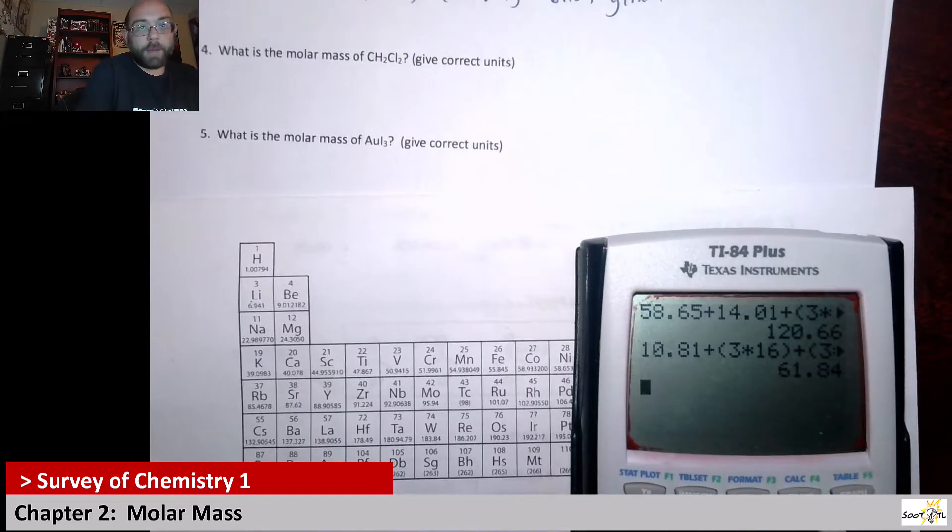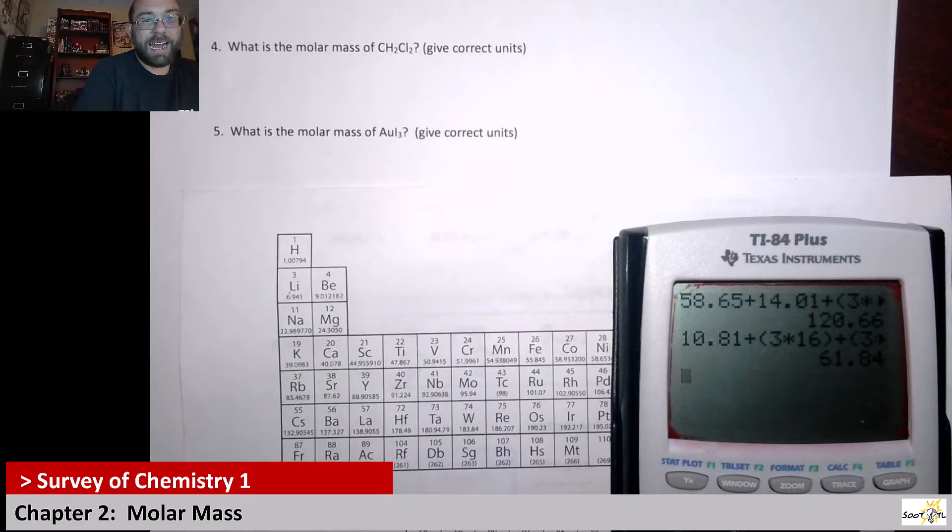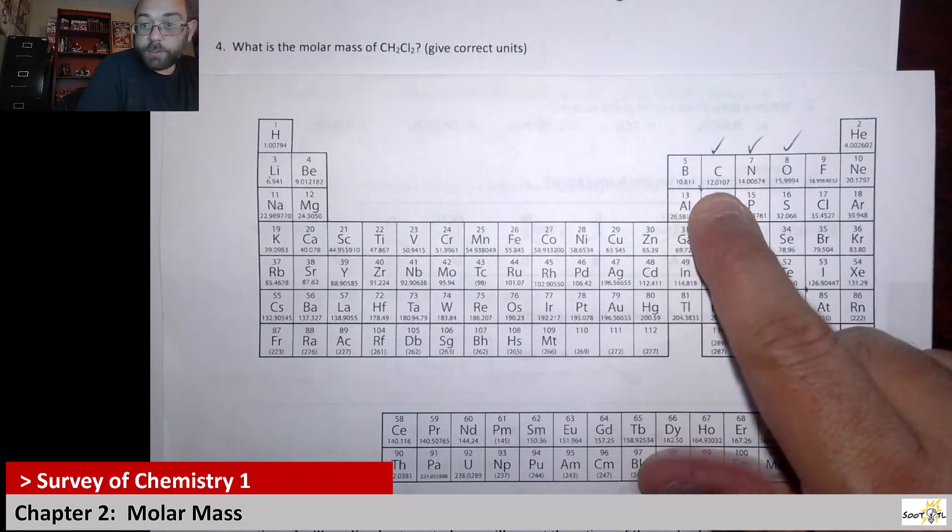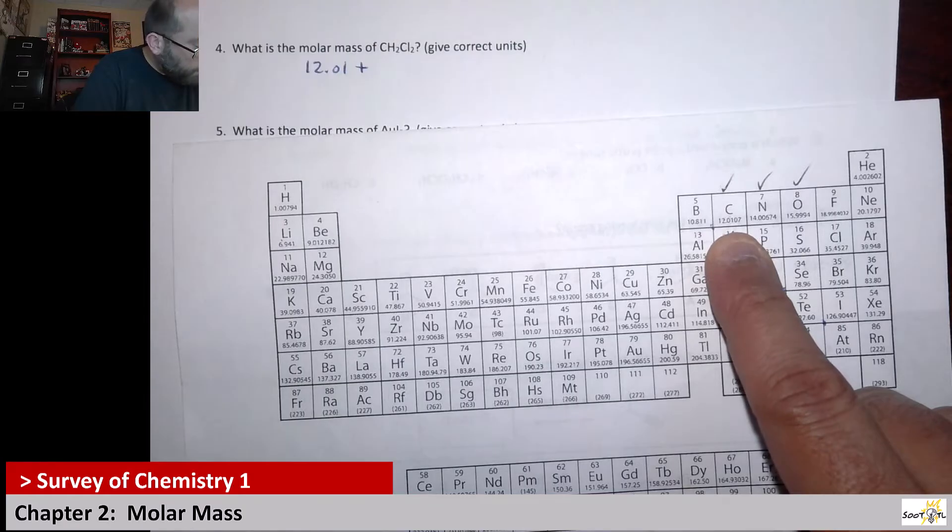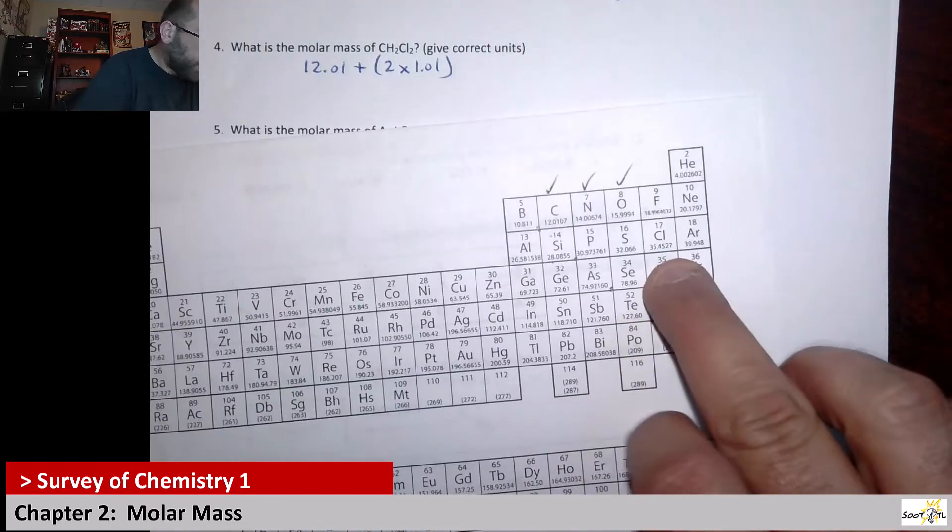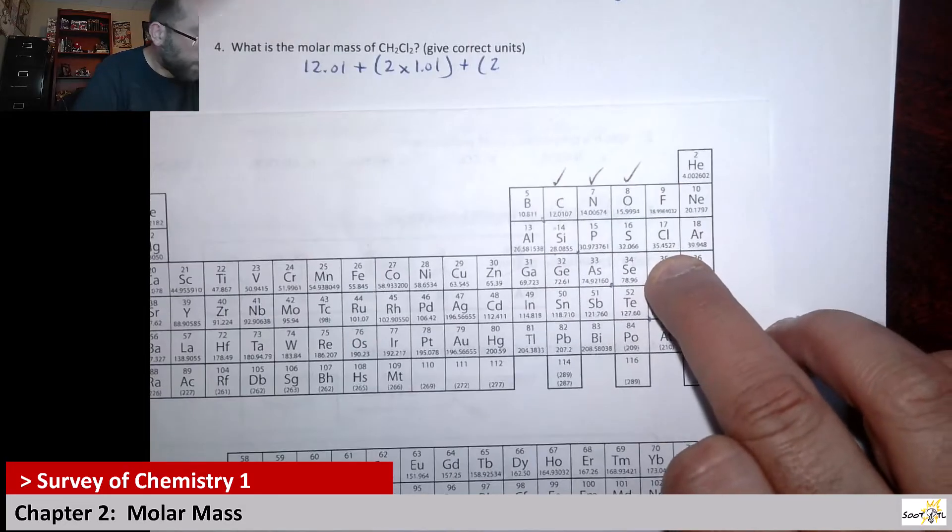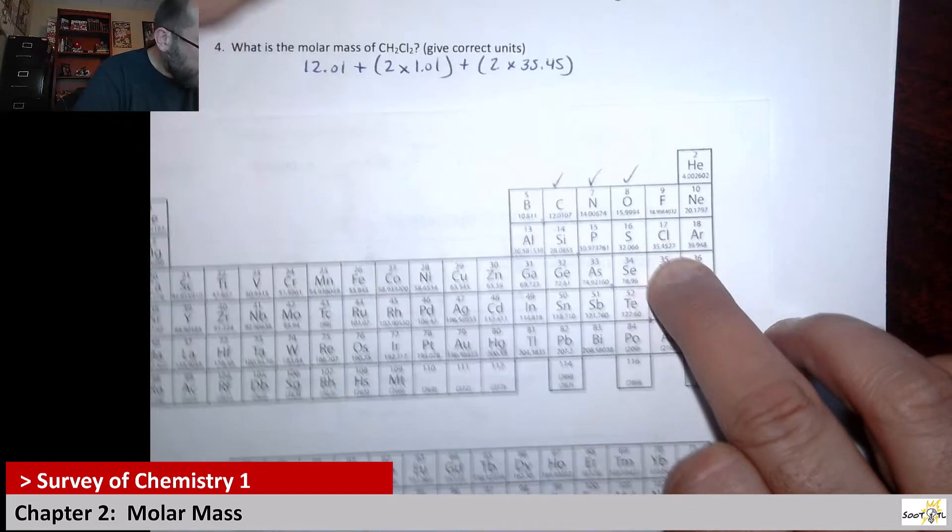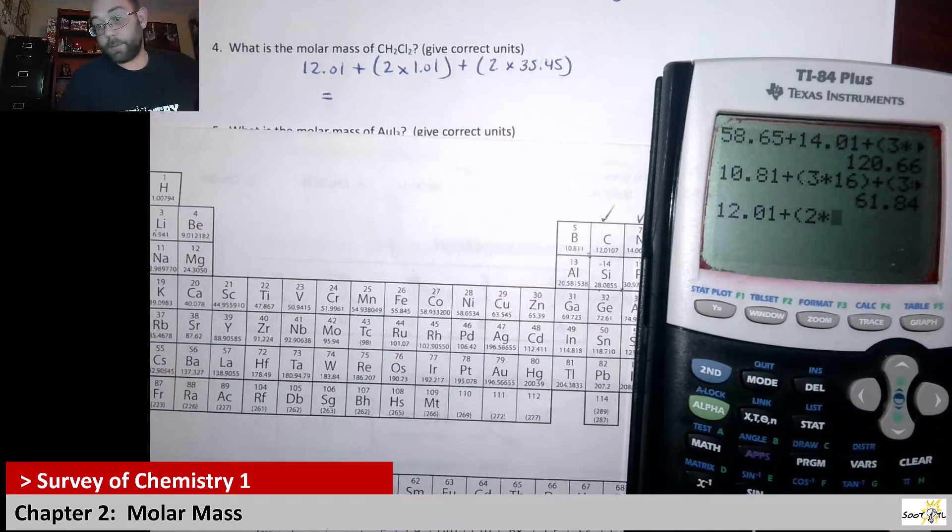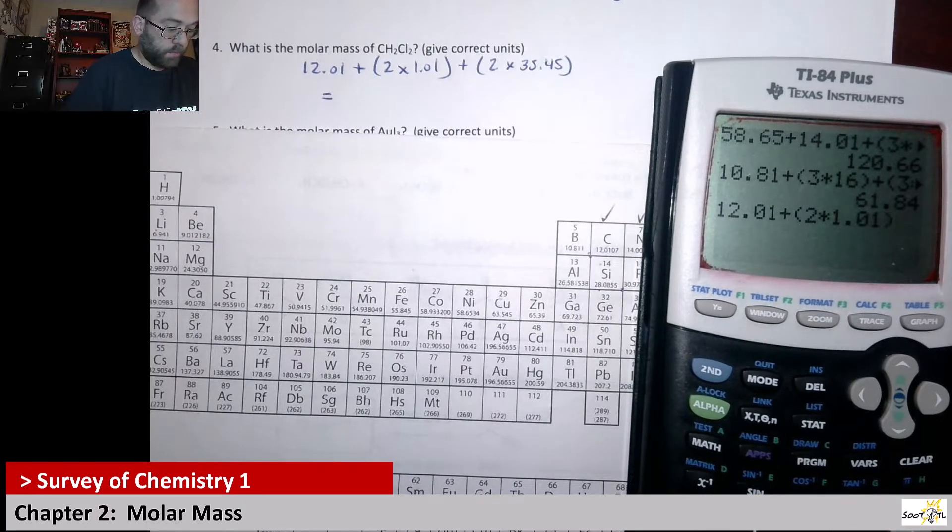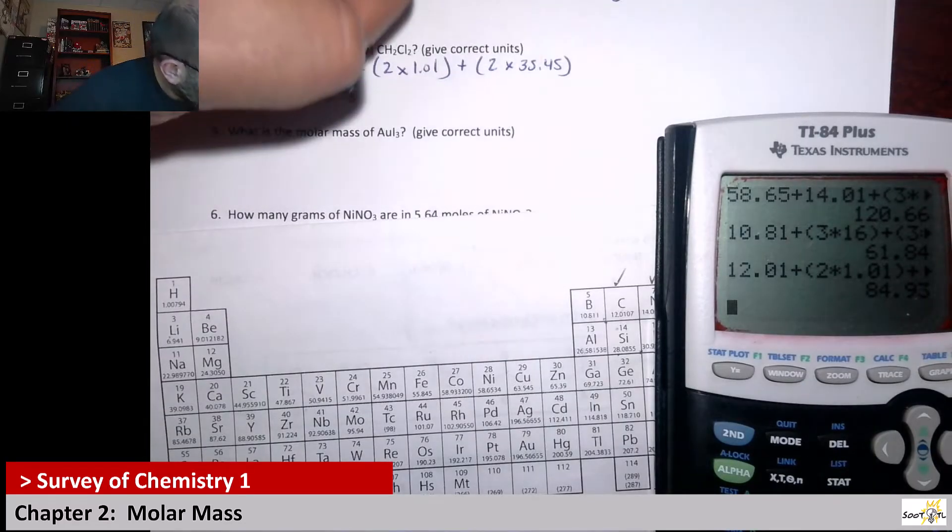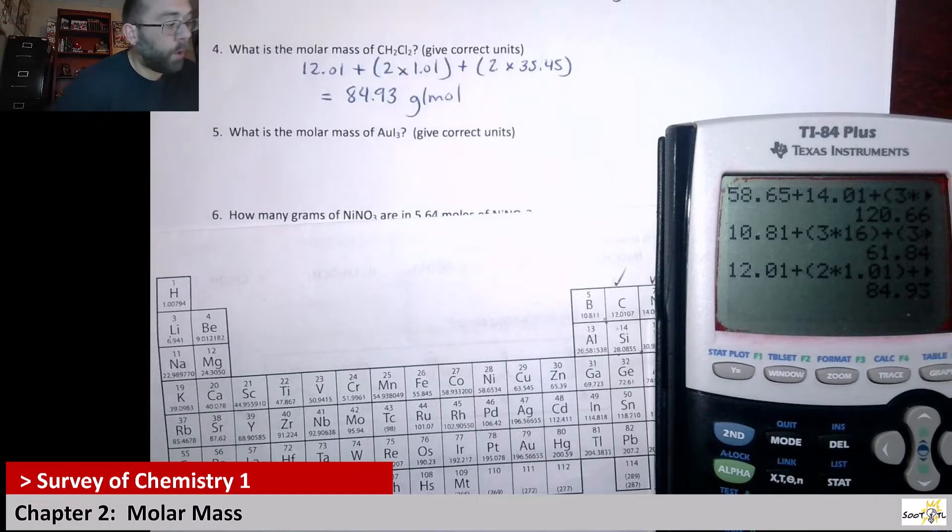Next up, it wants us to calculate the molar mass of CH2Cl2. So we've got carbon, hydrogen, and chlorine to concern ourselves with. So if we go to carbon up here, carbon's right here, 12.01. So we're going to say 12.01 plus the hydrogens. There's two of them, so it's going to be plus two times 1.01. And then we have two chlorines, so now it's going to be plus two times the chlorine mass, which is 35.45. So now let's see, what do we get when we do all that math? 12.01 plus two times 1.01 plus two times 35.45. We get 84.93. And yet again, units, grams per mole.